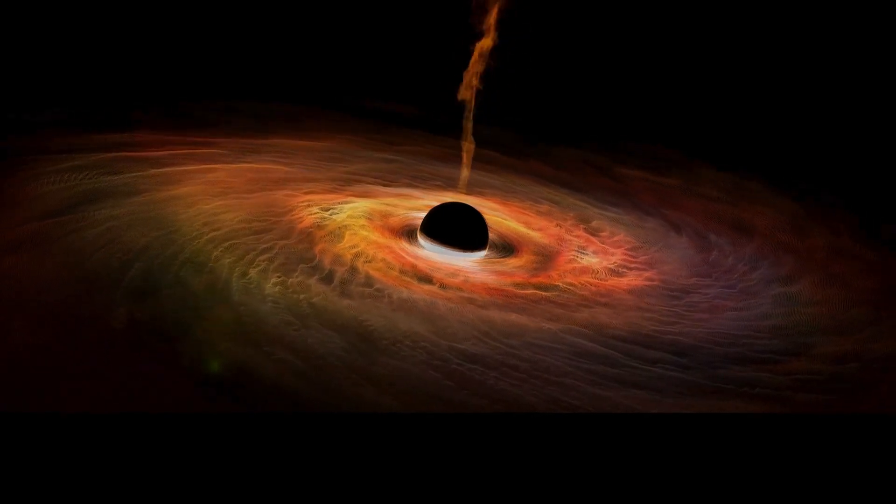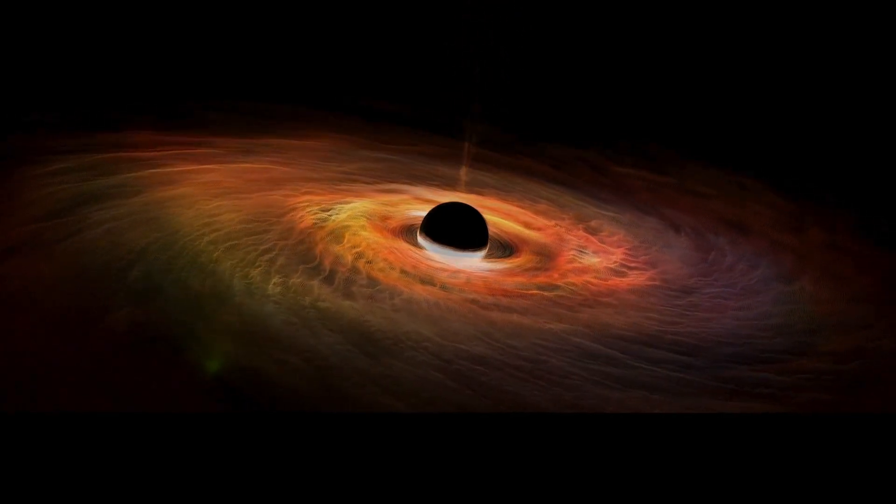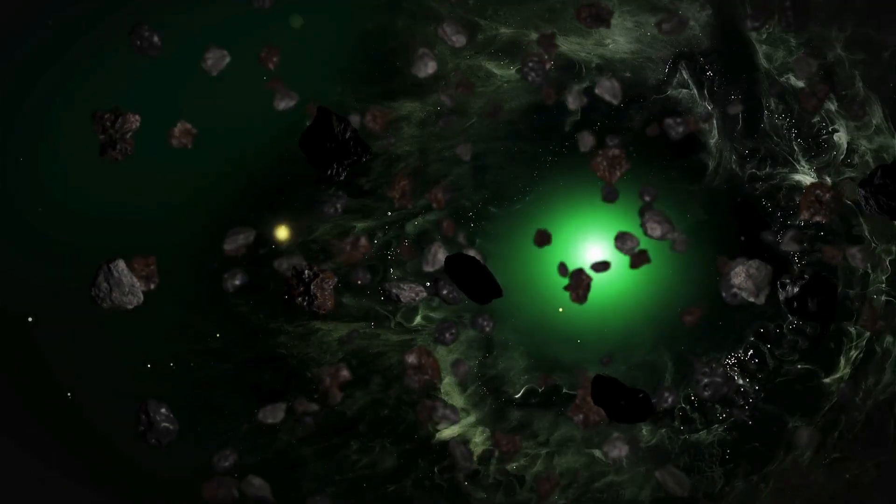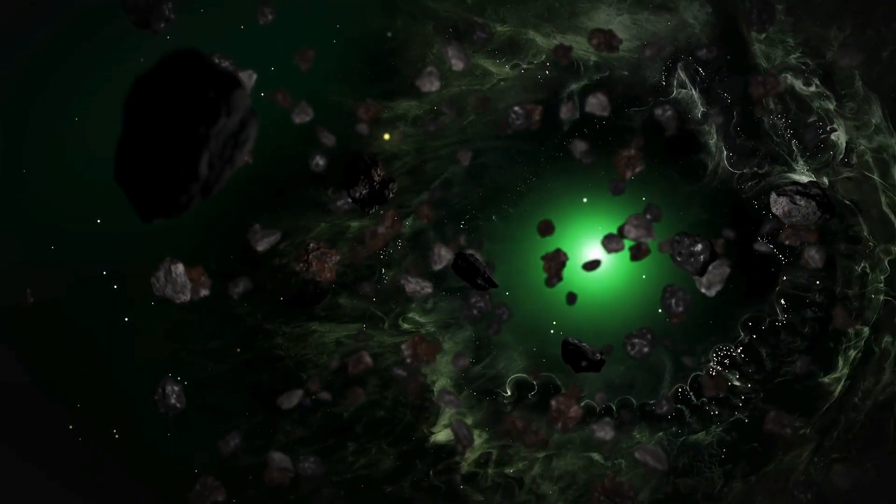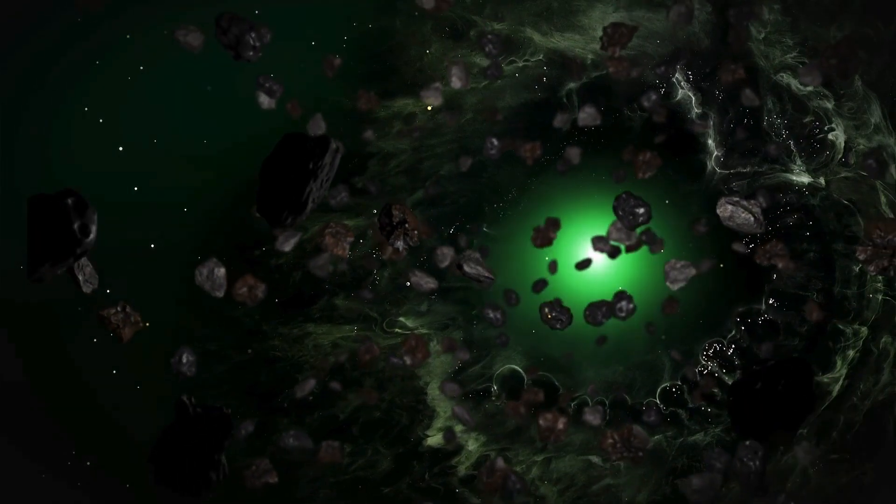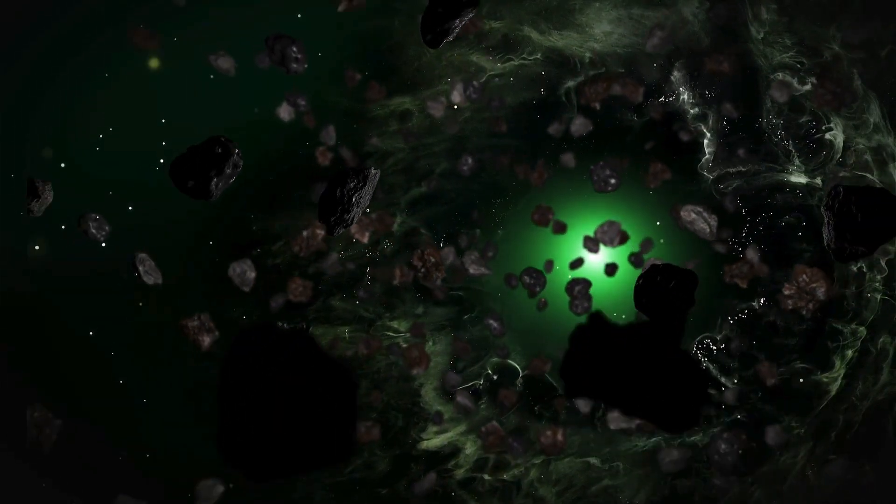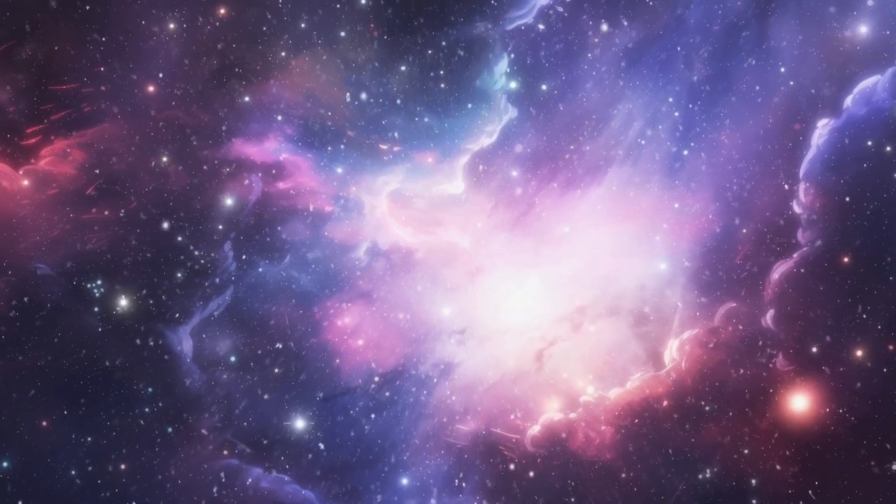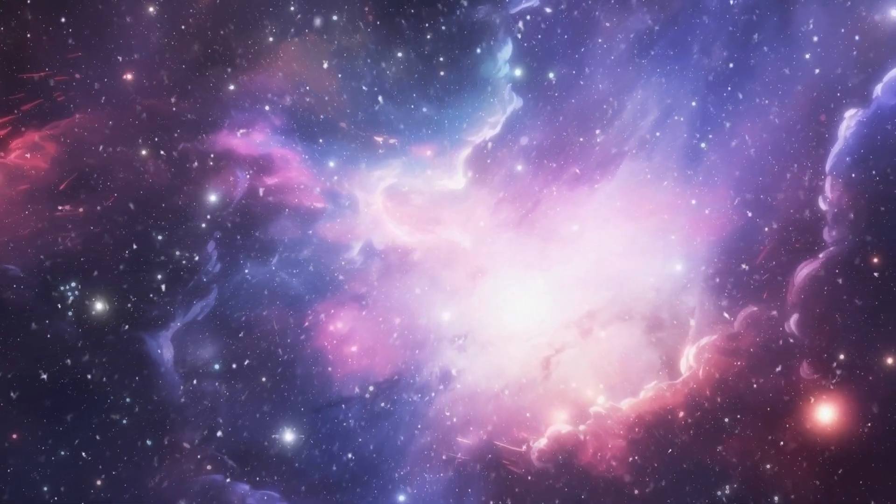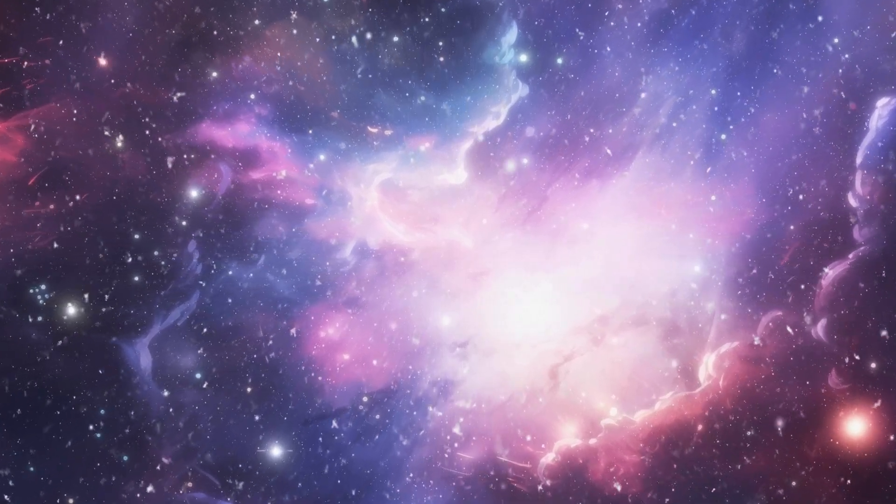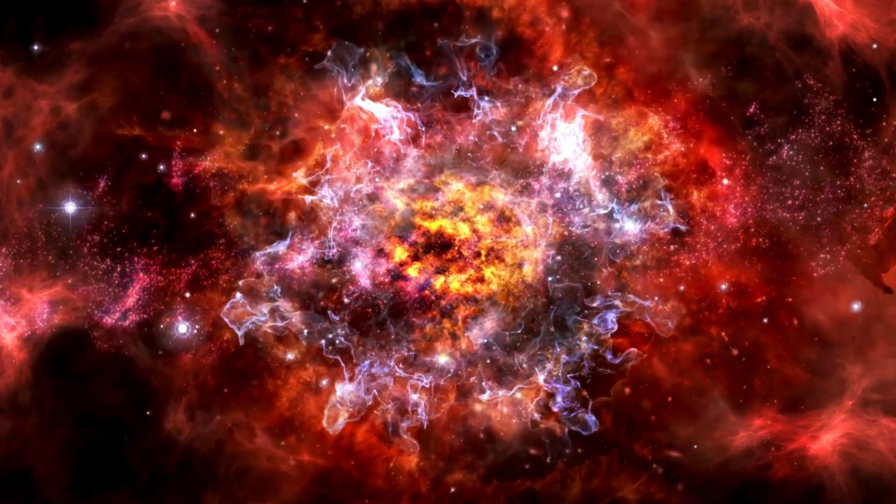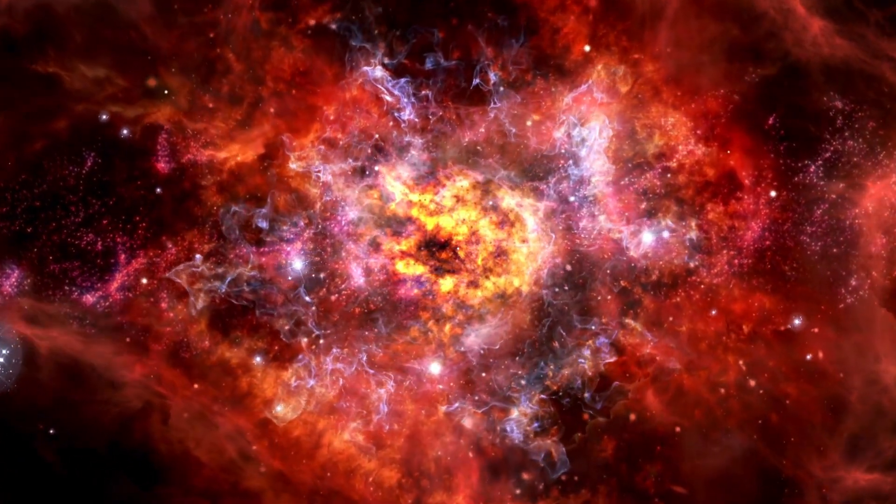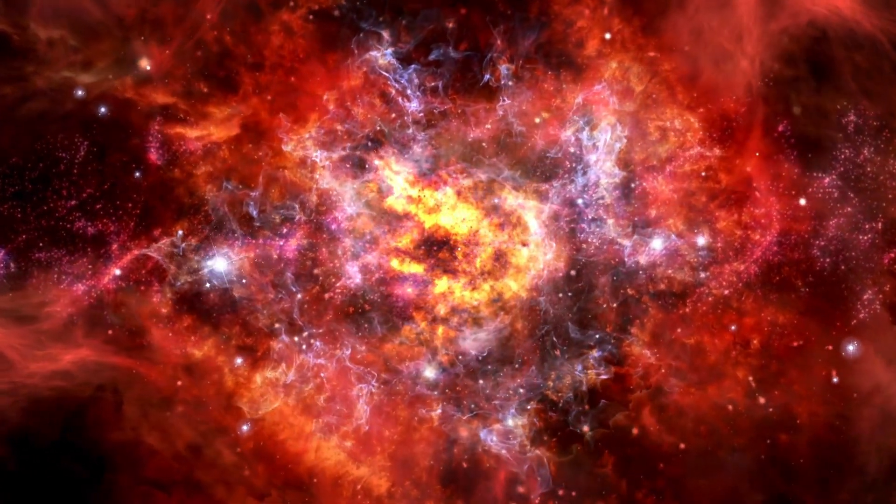Betelgeuse is not the only red supergiant in our galaxy. Others, like Eta Karinae, could explode before it does. In reality, our Milky Way should observe a supernova roughly every fifty years, yet we haven't seen one in the last four hundred years. However, we've observed the remnants of past explosions, indicating that we are overdue for a remarkable celestial event. It's only a matter of time before the next star puts on its spectacular show for the universe to witness.